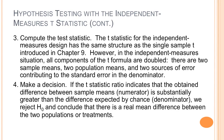Then compute the test statistic, which has the same structure as the single-sample t-test. However, in the independent measures design, all components of the t-formula are doubled: there are two sample means, two population means, and two sources of error contributing to the standard error in the denominator. Then make a decision — whether you fail to reject the null hypothesis because your calculated t-statistic did not fall into the critical region, or reject the null hypothesis because your calculated t-statistic is in the tails, meaning the difference between your sample means is significant and not due to chance or sampling error.